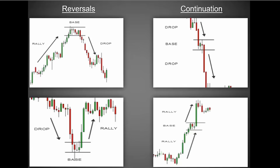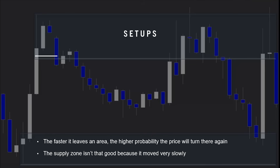These are the only patterns we need in order to trade. Reversals have a rally-base-drop and a drop-base-rally where the base becomes the zones to trade, and the other ones just have a small base where it stalls out before continuing to move in the original direction. The continuation patterns create supply and demand zones at their base as well. The speed at which price left the area determines the strength of the imbalance in price. We don't want to see a bunch of little candles — we want to see a few big candles. The faster it leaves an area, the higher probability the price will turn there again.